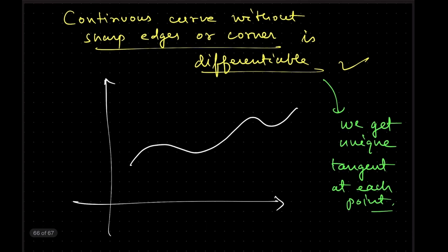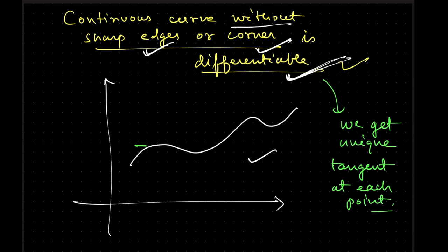A continuous curve without any sharp edge or corner is differentiable. Whenever we have a continuous curve that does not have a sharp edge or corner, it is always differentiable and at each point we will get a unique tangent.